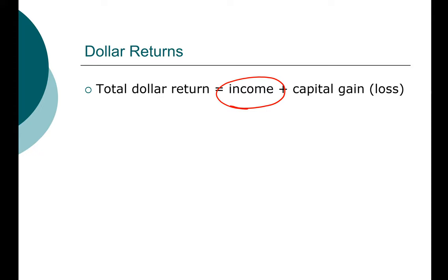If you invest in stock, the income component is typically dividends, and you receive dividends every quarter. If you purchase a bond, the income component will be coupon interest, and you receive that typically every six months. If you invest in a rental property, that will be your monthly rent. If you invest in a business, that will be your monthly income. The important concept is that it's recurring. If it is a bond, typically the interest may be the same every single time period.